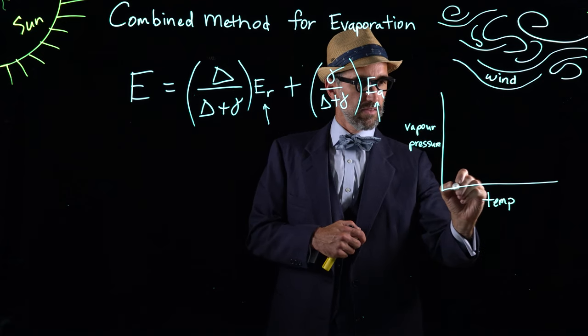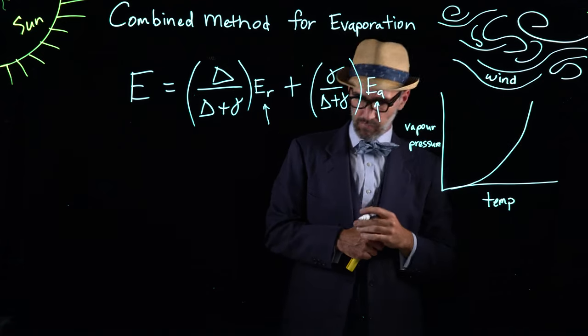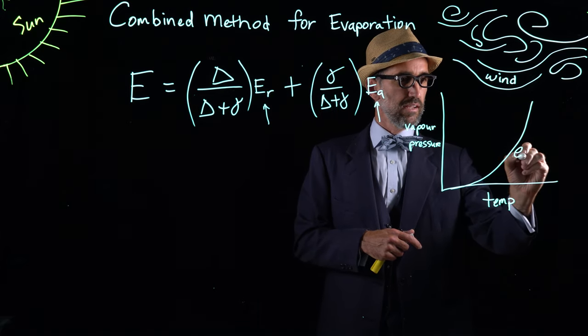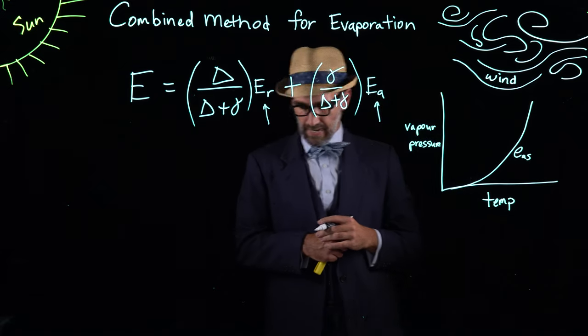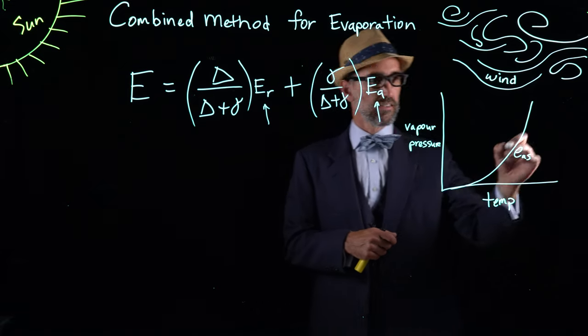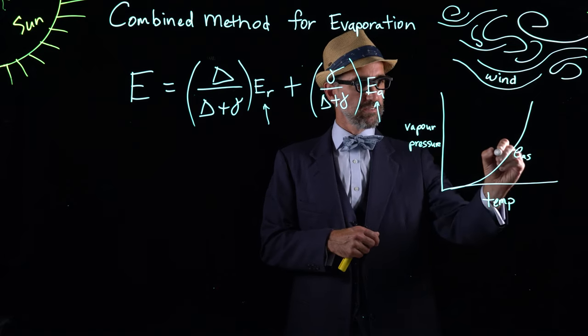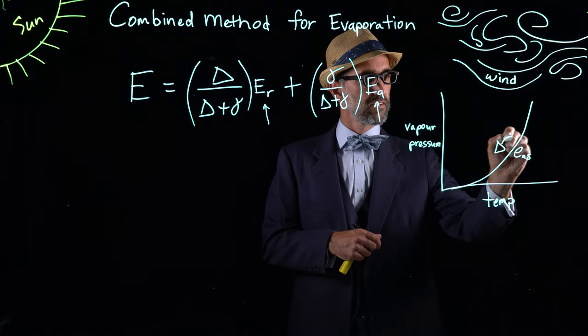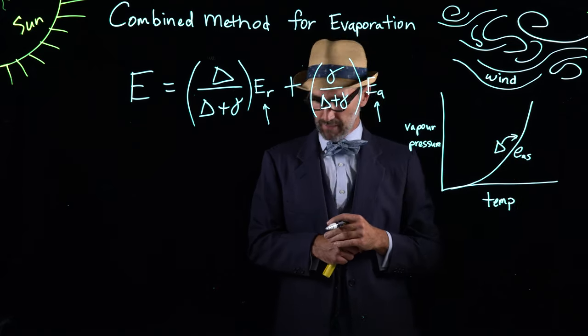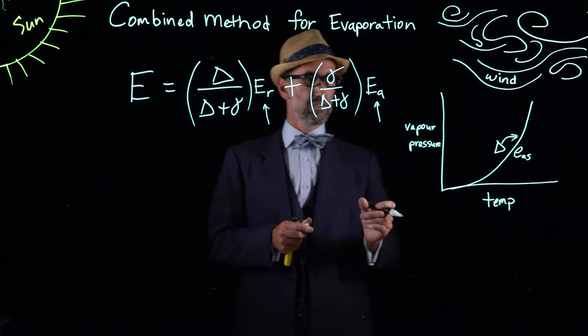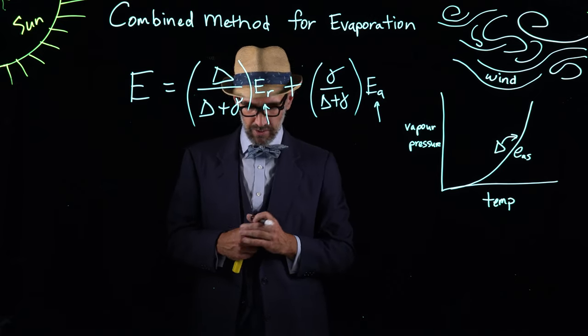That function looks something like this, and this function is E sub as, which is the saturation vapor pressure curve. Delta is the gradient of that curve. The other part of the equation is gamma, which is the psychometric constant.